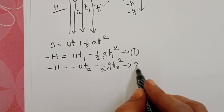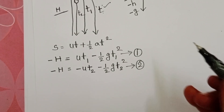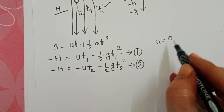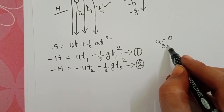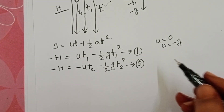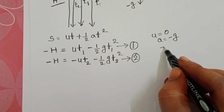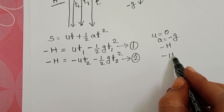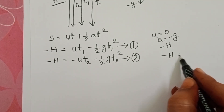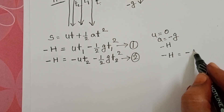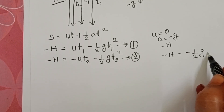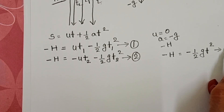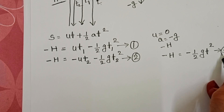The third body is dropped, so initial speed is zero and acceleration is negative. Displacement is also negative: minus H. The equation becomes: −H = −½GT². This is equation 3.